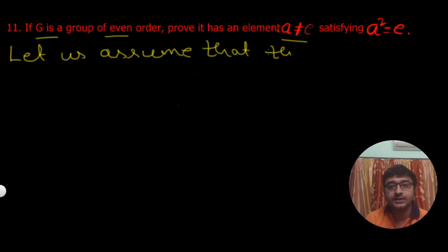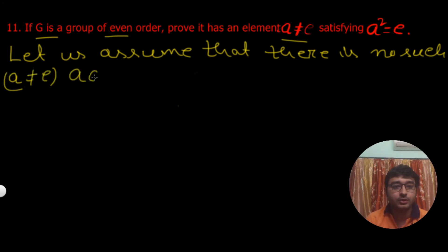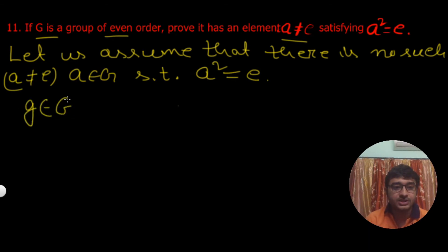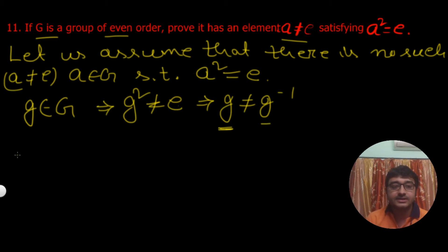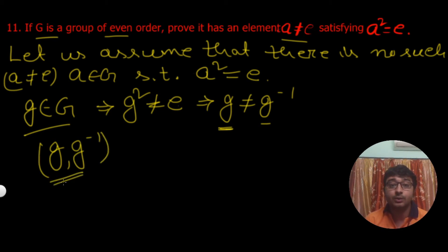Let us assume that there is no such A in G such that A squared equals E. So if we take any non-identity element G in this group, then G squared is not equal to E, which implies G is not equal to G inverse. We need to remember that G is a non-identity element, and for every non-identity element, G and its inverse are always distinct. This means every non-identity element will always form a pair with its inverse — G and G inverse form a pair.